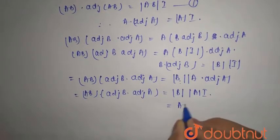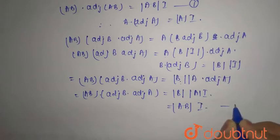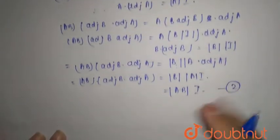So this can be written as AB mod identity matrix. This is your second equation. This is your first equation, this is your second equation.